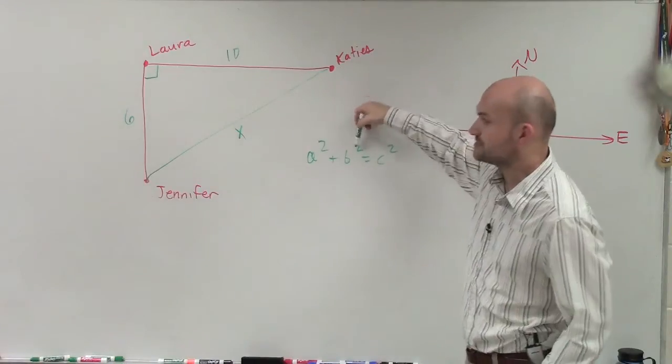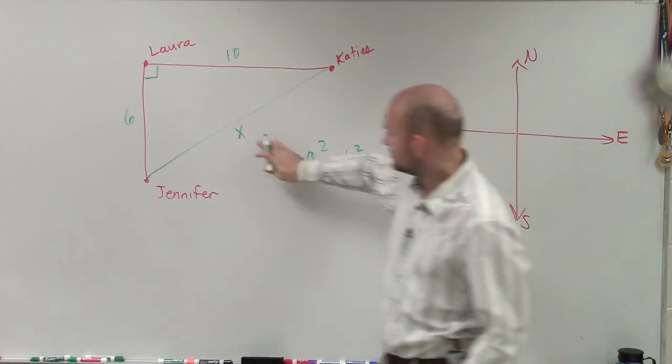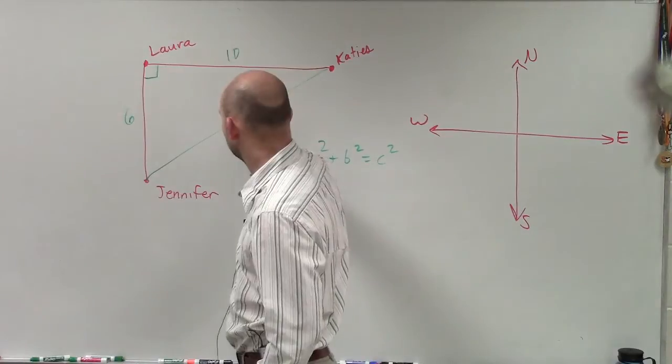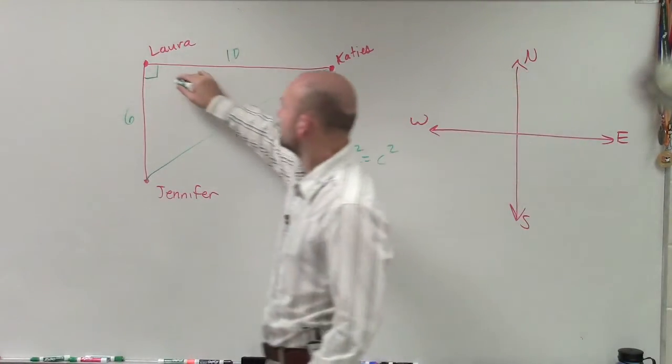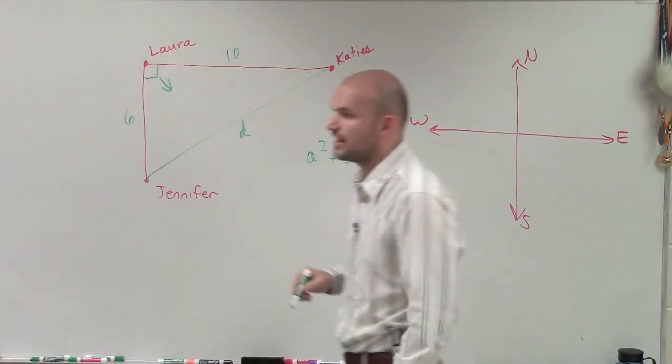Where a squared and b squared are the two legs, and this is distance, so let's just call this d. And c squared is the hypotenuse, so what's the hypotenuse again? Remember, your right angle points to your hypotenuse.